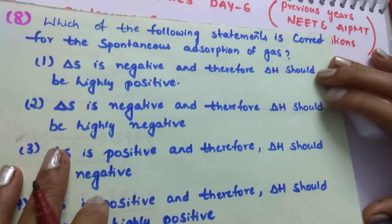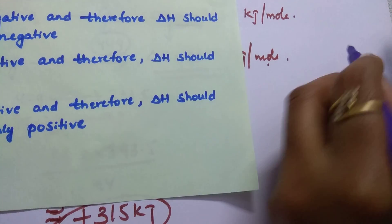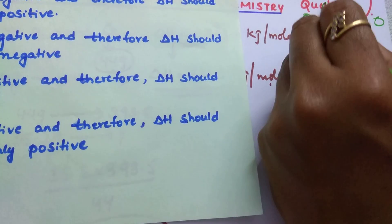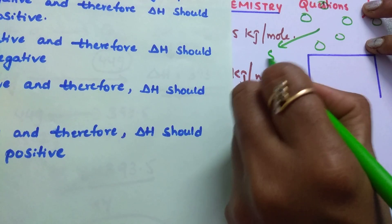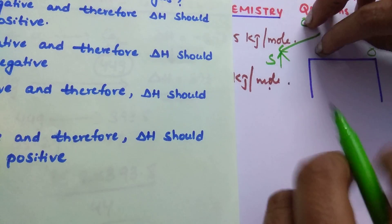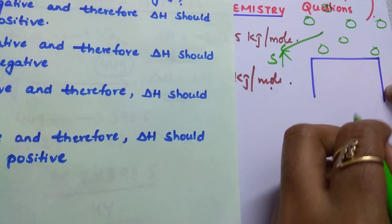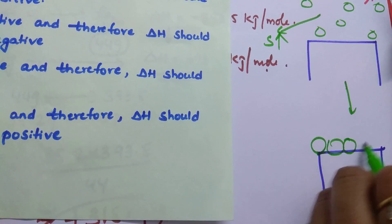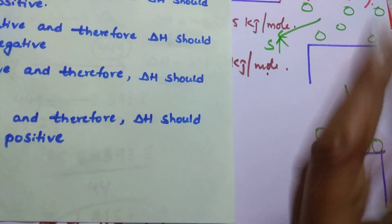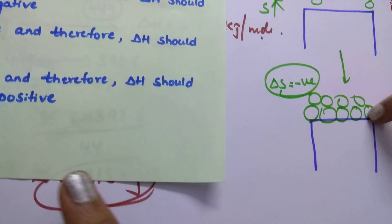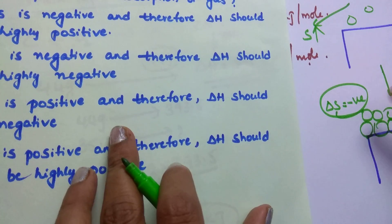Which of the following statements is correct for the spontaneous adsorption of a gas? When gas molecules are present freely, there is more degree of randomness — spontaneity is more, so entropy is more. All the gas molecules are moving in different directions. But whenever all these gas molecules are adsorbed on the surface of a catalyst, then entropy decreases. So the change in entropy value will be negative — delta S is negative.